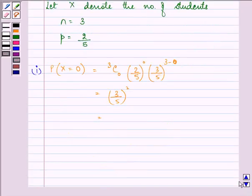So further we have, sorry, it's 3. So we have the answer as 27, that is 3 cubed, divided by 5 cubed, that is 125. This gives us 27/125, which is the answer to the first part.